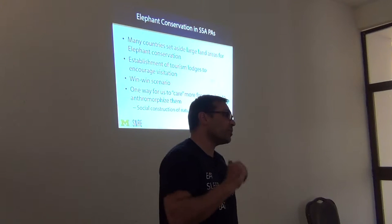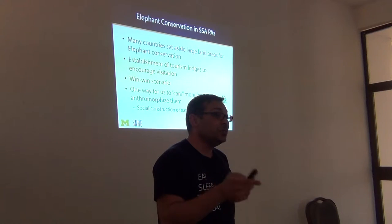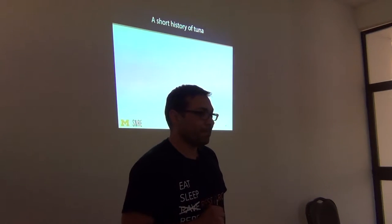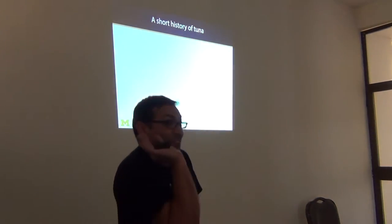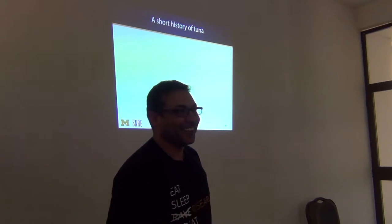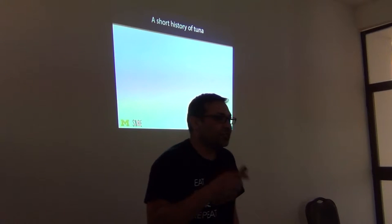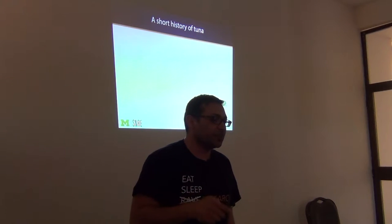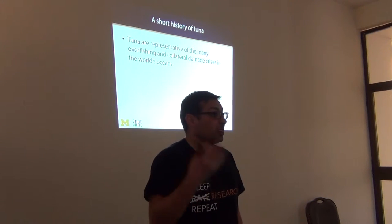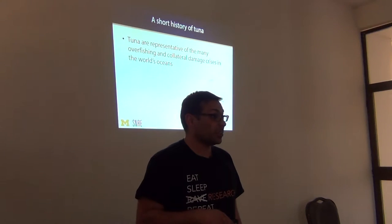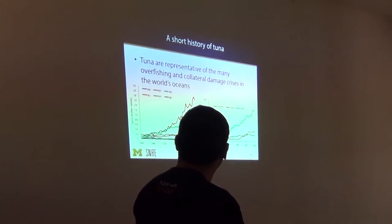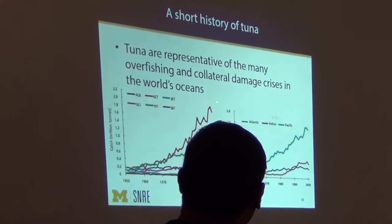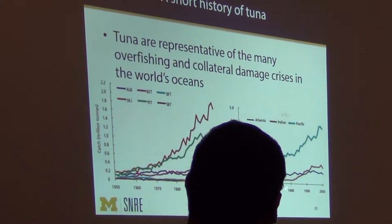The way I want us to think about this notion of socially constructing animals is to use the example of fish — tuna. Tuna are really interesting to think about as socially constructed because they're representative of overfishing and collateral damage crises in the world's oceans, much like livestock grazing resulting in overgrazing. If you look at the albacore, the skipjack, the bluefin, the yellowfin — if you look at the catch across the Atlantic, the Indian, the North Pacific — the catch is going up while the numbers are going down.